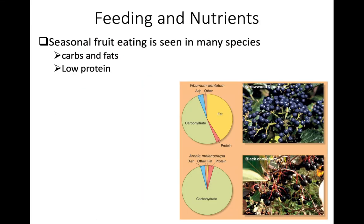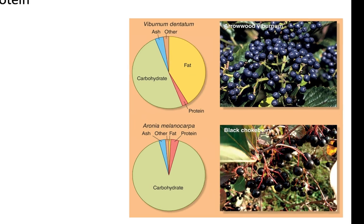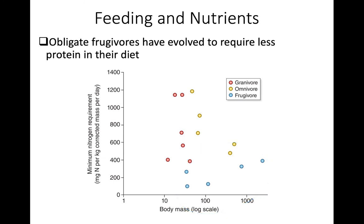Fruits are eaten by many species because they contain lots of carbohydrates and fats — a ready source of energy. However, fruits have very low protein content, which can be challenging for frugivorous species. Some frugivores supplement with insects to get protein, but many have simply evolved a more efficient use of protein and require less protein in their diet. Frugivorous species have a much lower minimum nitrogen requirement than omnivorous or granivorous birds.